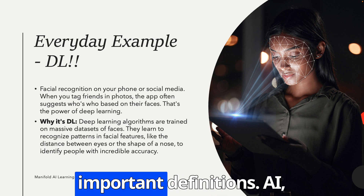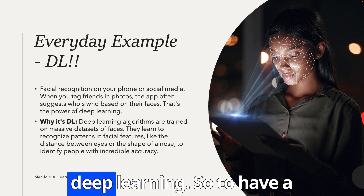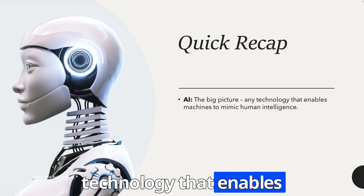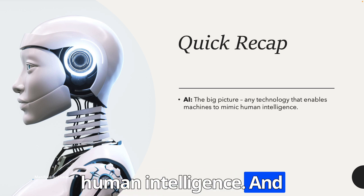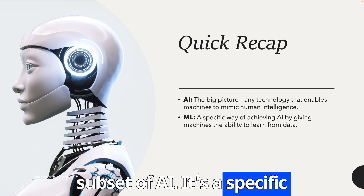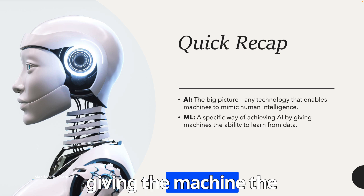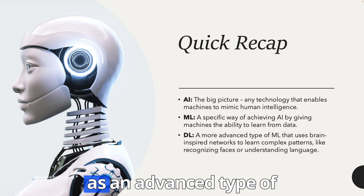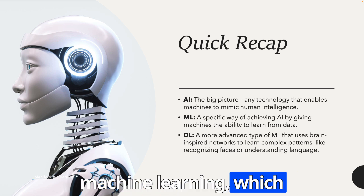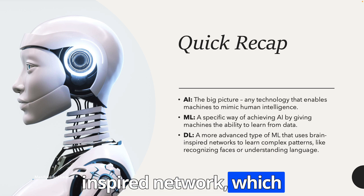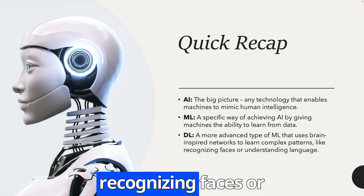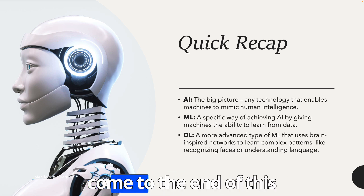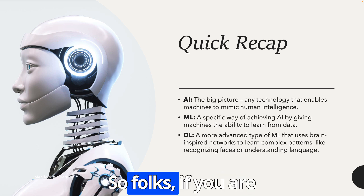To recap the three important definitions: AI is the big picture — any technology that enables machines to mimic human intelligence. Machine learning is a subset of AI — a specific way of achieving AI by giving machines the ability to learn from data. Deep learning is a subset of machine learning, an advanced type that uses human-brain-inspired neural networks to learn complex patterns like recognizing faces or understanding language.